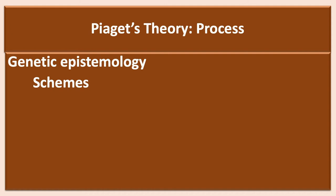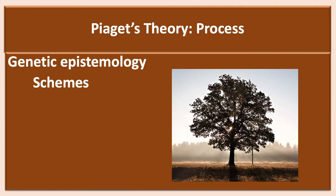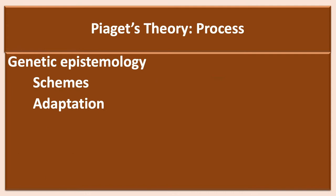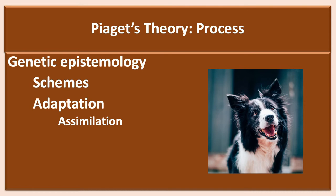Central to this theory is the concept of schemes or schema. The difference between the two terms is that scheme refers to a pattern of action, while schema more often refers to a more static concept or image. For example, as infants and children interact with the environment, they form mental images such as tree or field, and when they develop language, they attach labels to those images. They also develop action patterns such as how to order food at a restaurant. These schemes, or created mental representations, allow them to interact with and adapt to the demands of the environment.